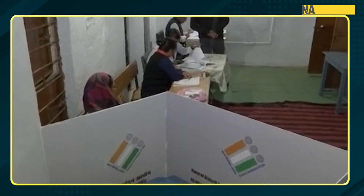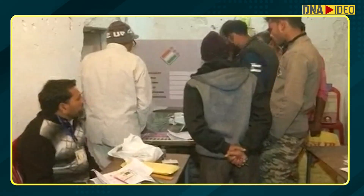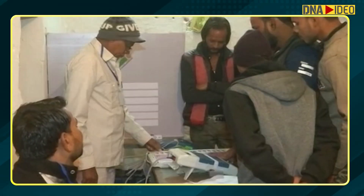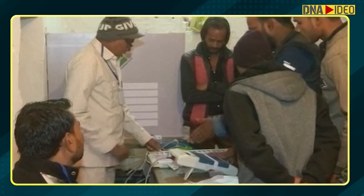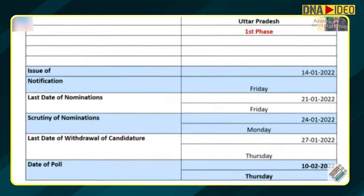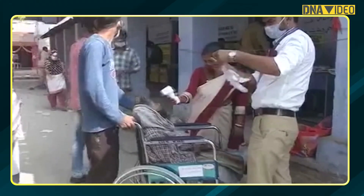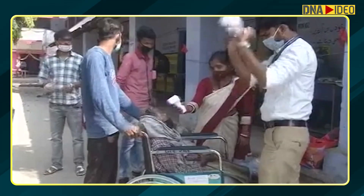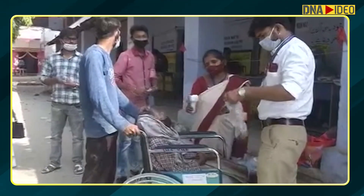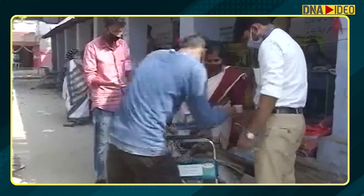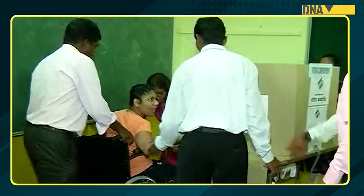The second phase is a very important phase, covering four states: Uttar Pradesh second phase, Punjab in one phase, Uttarakhand in one phase, and Goa in one phase. So in the second phase, Punjab, Uttarakhand and Goa will be completed.